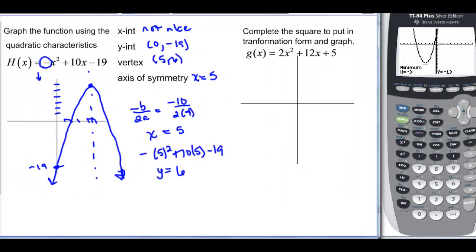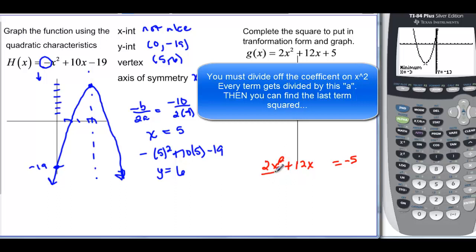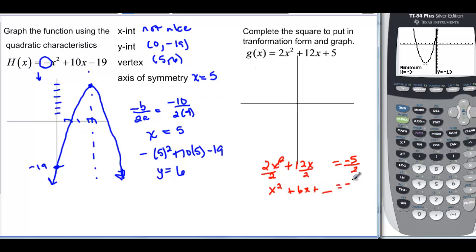So here we have a problem that they're asking us to complete the square and to put it in transformation form or vertex form. And then we can graph. To remember how to complete the square, you have 2x² + 12x. And then you want to put the constant on the other side, so minus 5. But then you have to have x². So you have to divide everything by 2. So this is x² + 6x + some number is equal to -5/2 + some number.